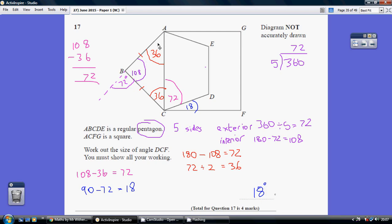So the angles inside the triangle add up to 180. We know this is 108. So these two together add up to 72, split equally between the two. So this angle and this angle is 36.